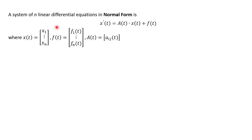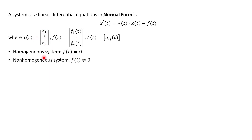A system of n linear differential equations is called or considered in normal form if it looks like this. We have x prime equals a times x plus f of t, where a is a matrix and f is a vector of functions, and x is also a vector of functions of t. If you have a homogeneous system, f is zero; if it's non-homogeneous, f equals something.